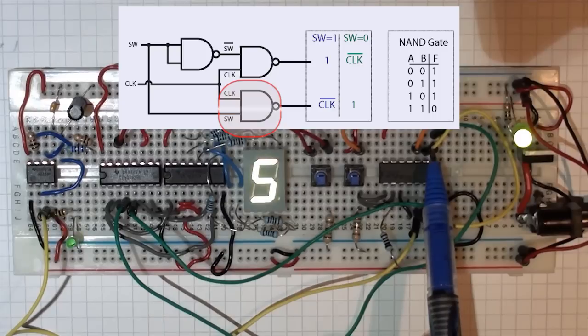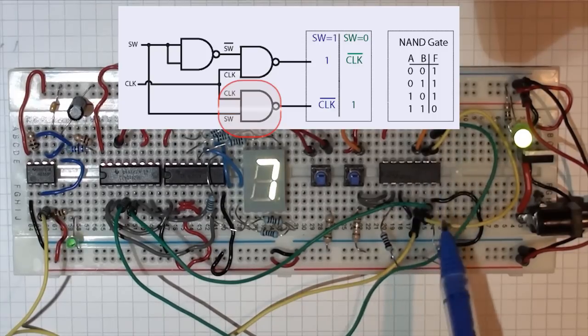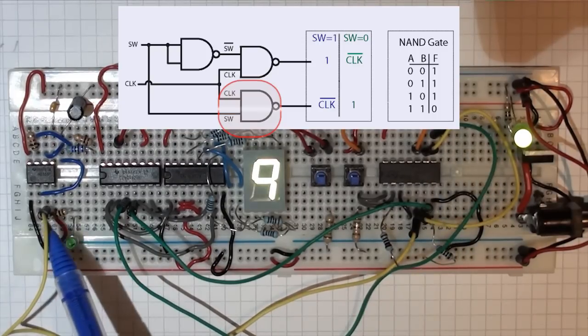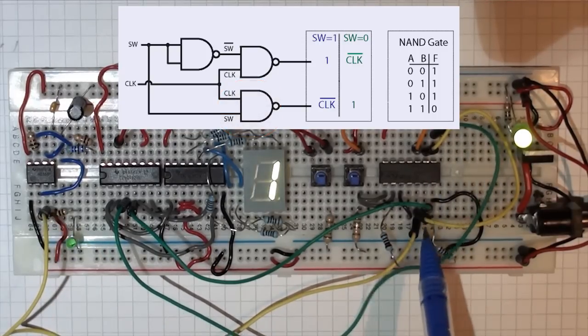And then this is the clock pulse that's coming in. So the yellows refer to the clock pulse that's being sent from the 555 timer.